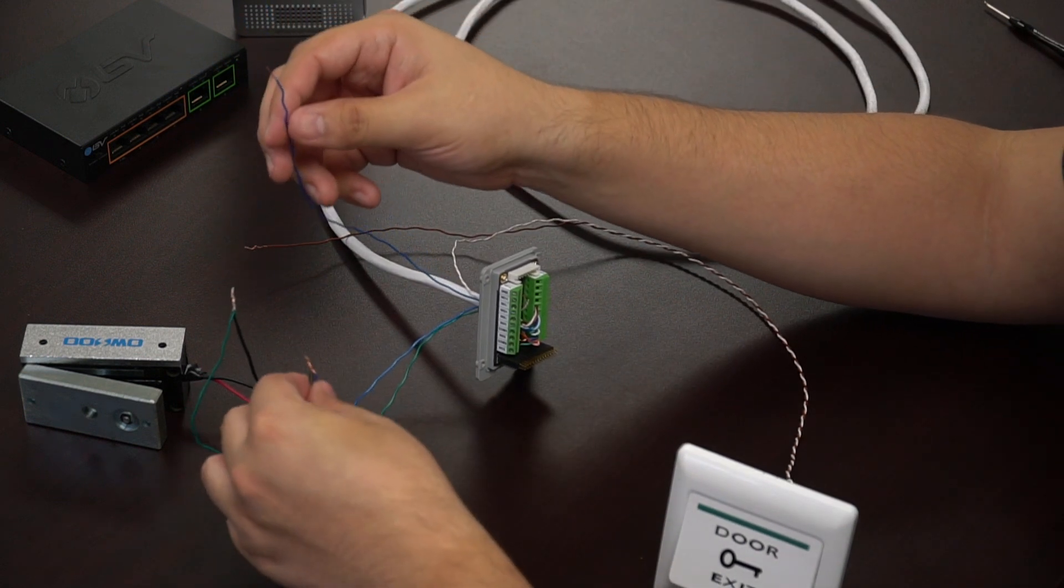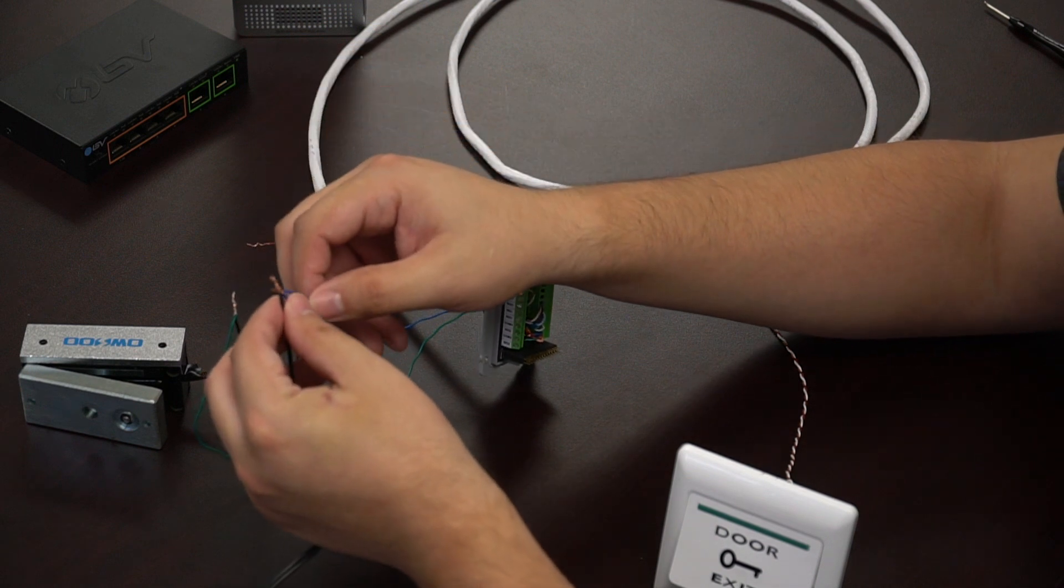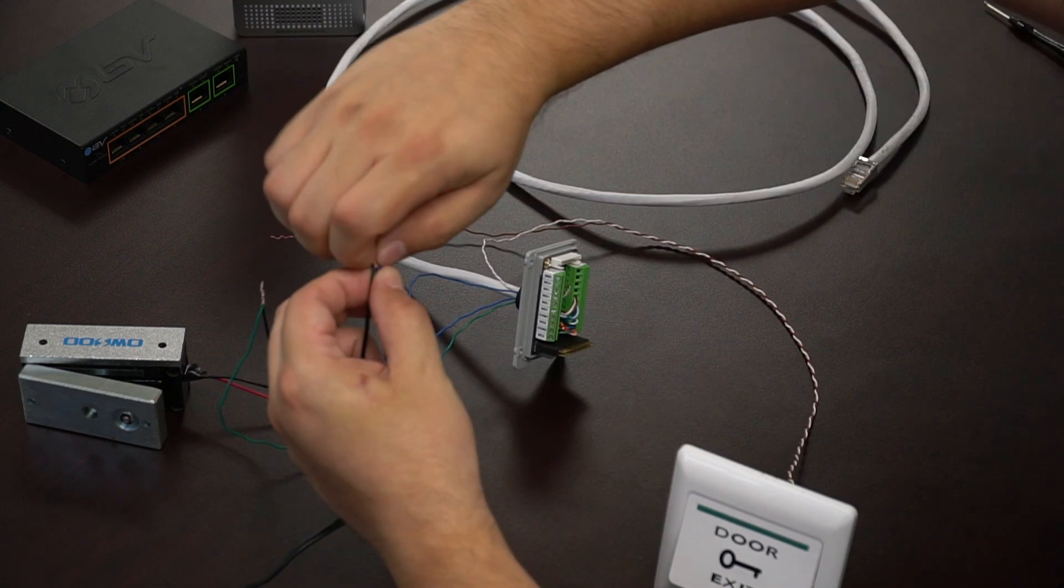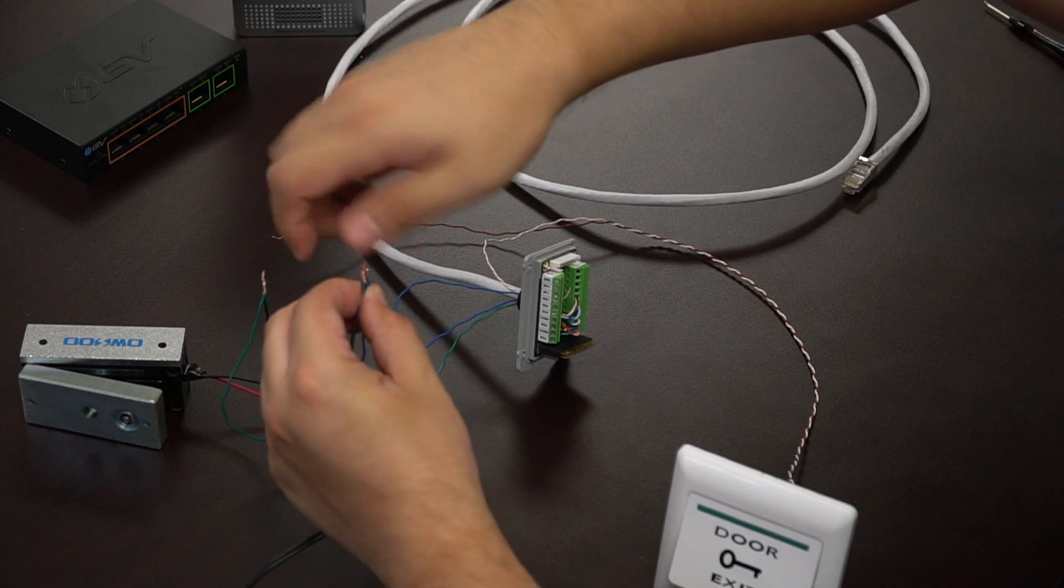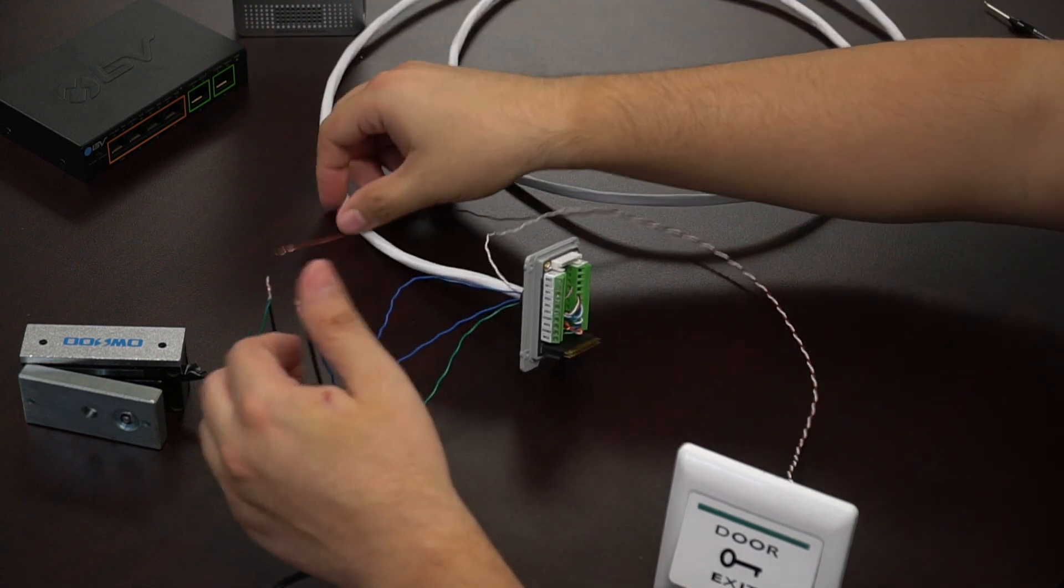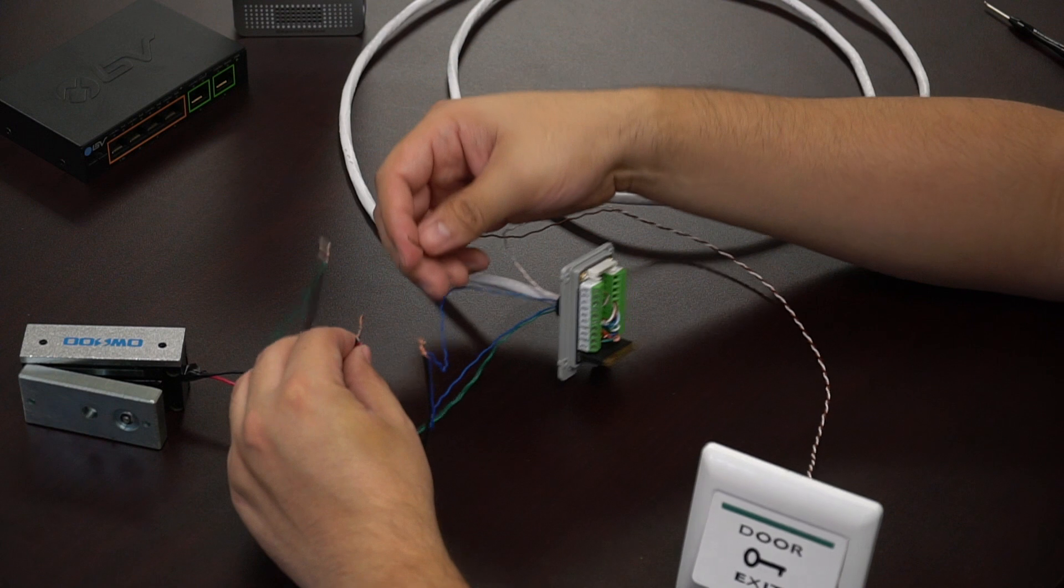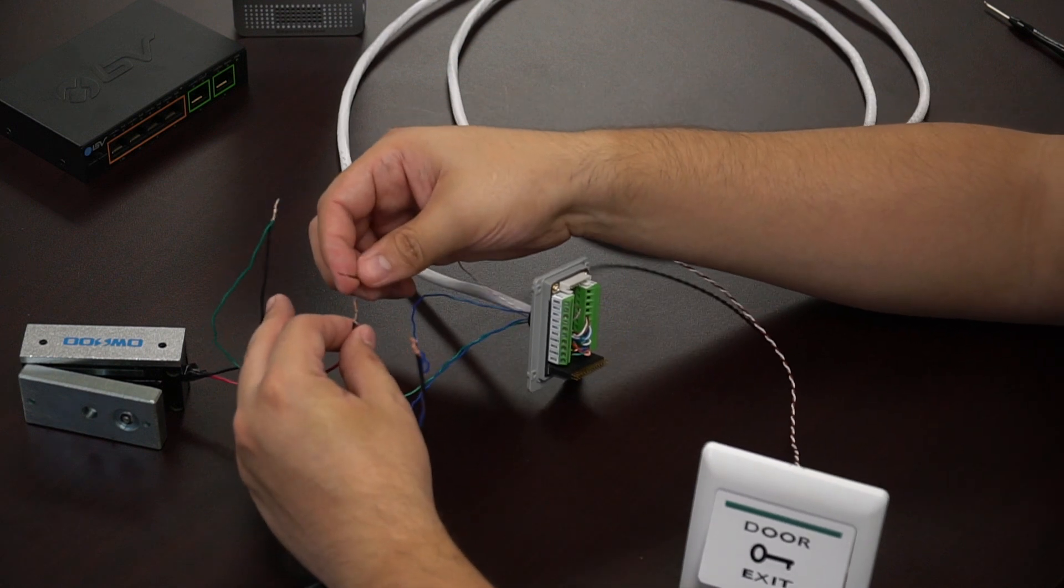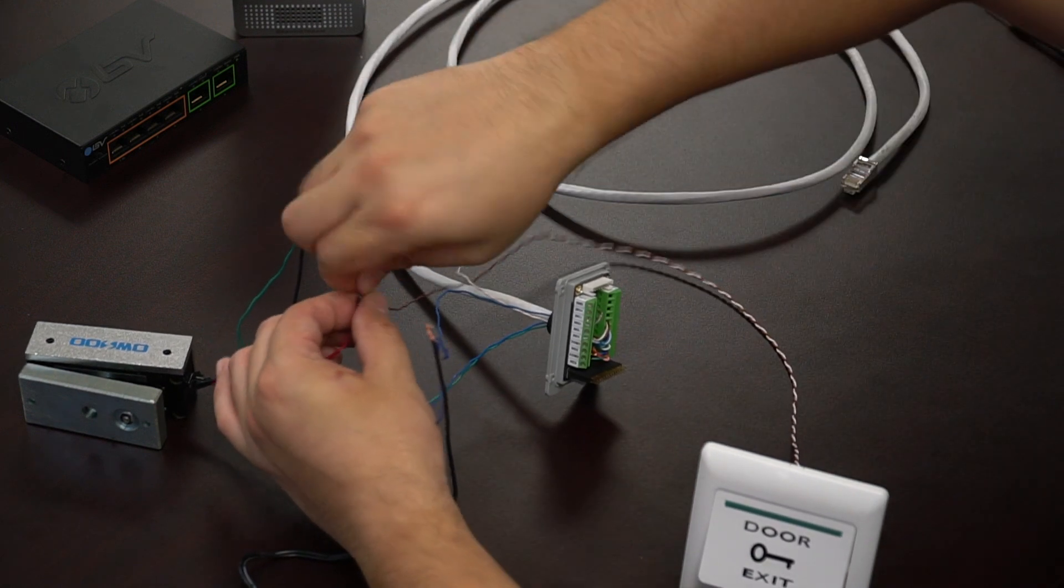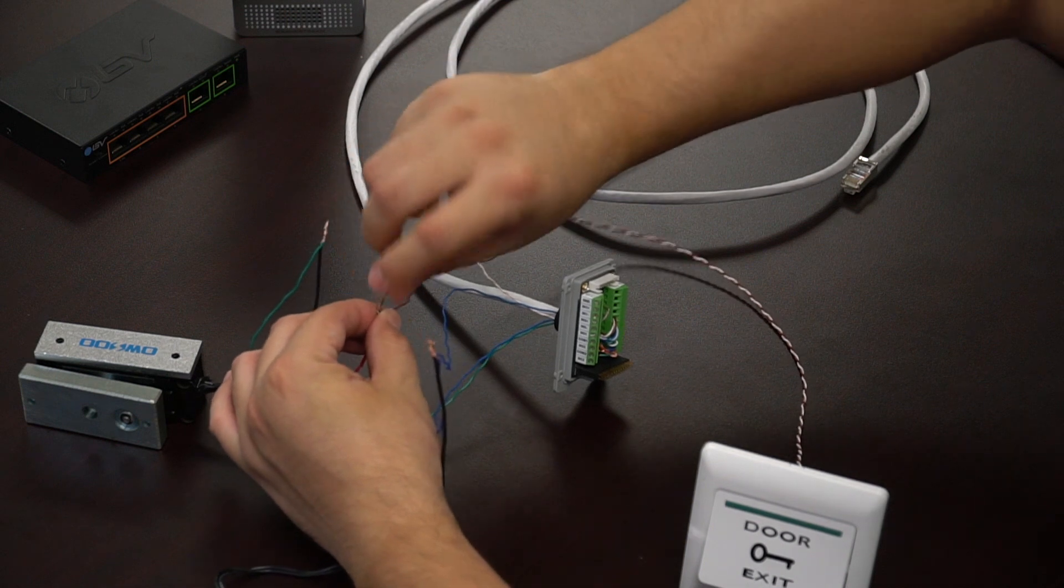Now from there we're going to take that blue wire that's connected to the N1 negative and connect it to the ground of the power supply. Now we're going to be taking the other wire of that switch and twisting it up and connecting it to the positive voltage of the magna lock.